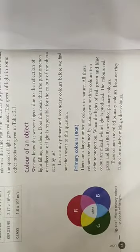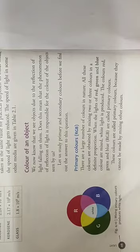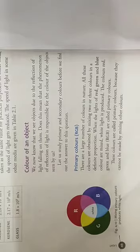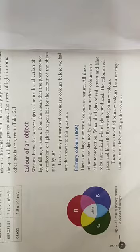Now let us learn about the color of an object. When we see an object, it is due to the reflection of the light which falls on it. The color of the object is due to the light which is reflected by the object. For example, if a red rose is appearing red, then when light falls on it, it reflects the red light and absorbs the rest.